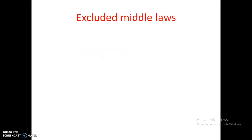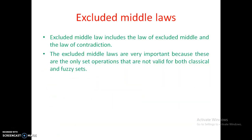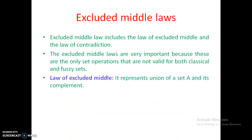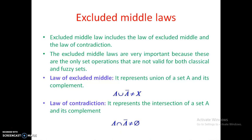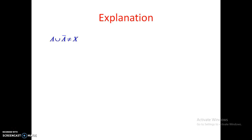However, some properties are excluded — the excluded middle laws are very important because these never hold good for fuzzy sets. The first is the law of excluded middle: A union A-bar is NOT equal to the full set X. Similarly, the law of contradiction: A intersection A-bar is also NOT equal to the null set.